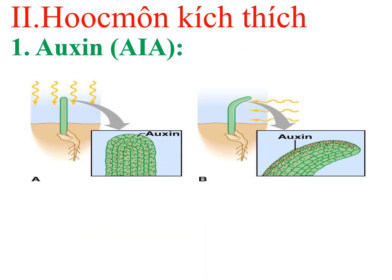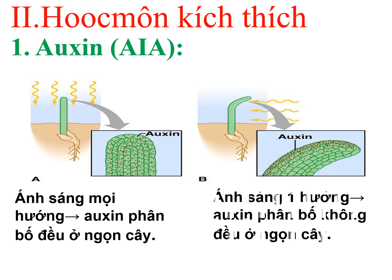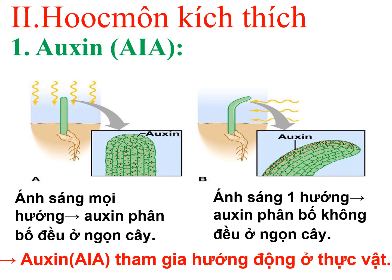Quan sát hình ảnh: ở hình A, ánh sáng tác động đến cây từ mọi hướng thì auxin phân bố đồng đều ở ngọn cây, sự sinh trưởng của cây diễn ra đồng đều. Nhưng ở hình B, khi ánh sáng tác động từ một hướng xác định thì auxin phân bố không đồng đều, làm cho ngọn cây hướng về nơi có ánh sáng. Đây chính là hiện tượng hướng sáng - một kiểu hướng động. Qua đây chứng tỏ auxin tham gia vào hướng động ở thực vật.